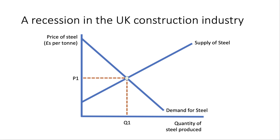Final example: a recession in the UK construction industry — a downturn with fewer homes or commercial properties being built. If there is less output in the construction industry, the demand for steel shifts inward to D2. Other things being equal, output contracts from Q1 to Q2 and the price of steel falls from P1 to P2.